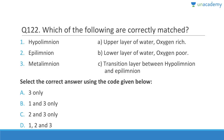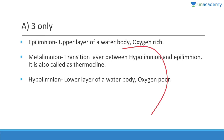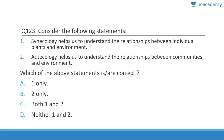Question 122: Hypolimnion is the lower layer of water, which is oxygen-poor — not the upper layer. Epilimnion is the upper layer of a water body, which is oxygen-rich. The metalimnion is the transition zone between the hypolimnion and epilimnion — that is correct. Answer is three only. The metalimnion is also called the thermocline because of a sharp fall in temperature.